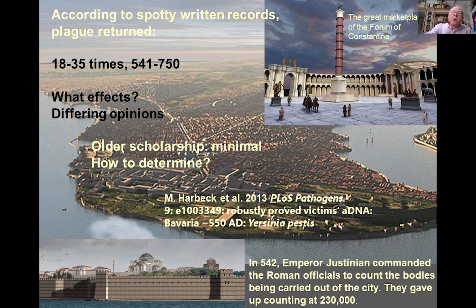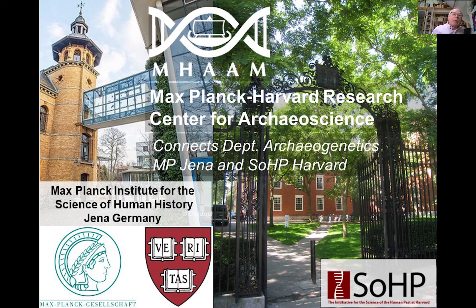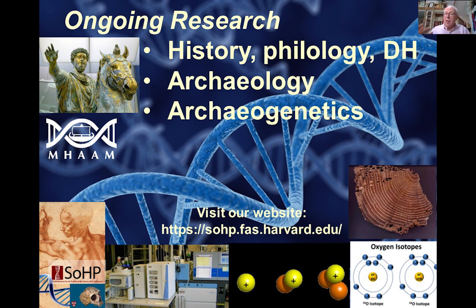The first big step was taken by another international team in 2013 when they proved from victims' skeletons in Bavaria — where there is total silence on the presence of plague — that those people died around 550 of Yersinia pestis. The Science of the Human Past at Harvard joined forces with the Max Planck Institute for the Science of Human History in Germany and began a systematic study of skeletons, identifying those of people who might have died in the Justinianic pandemic and looking for the ancient DNA of the disease that took them down. We're combining history, philology, digital humanities, archaeology, and archaeogenetics in this inquiry.